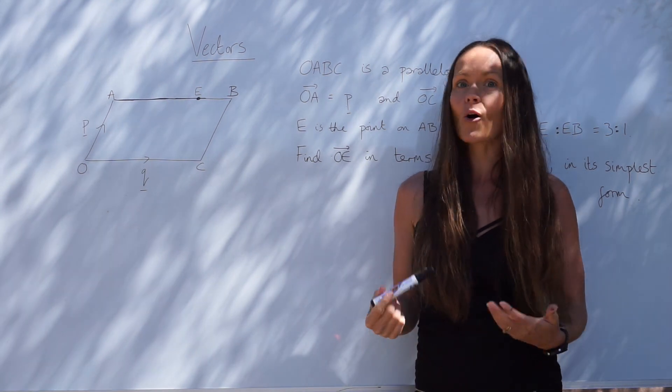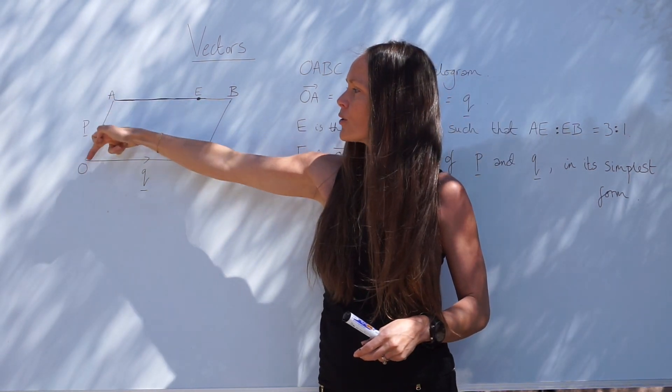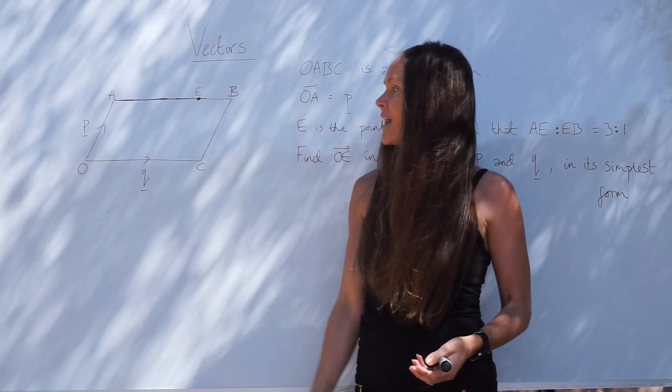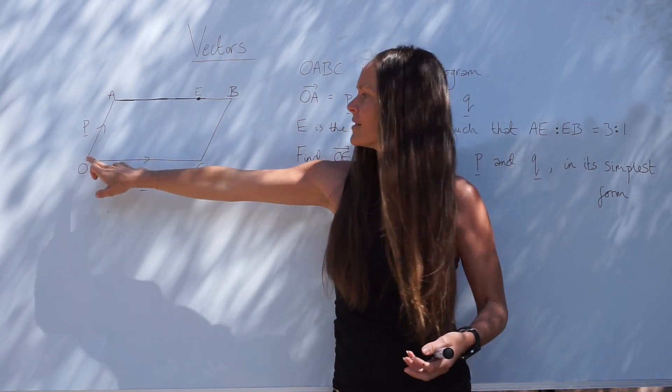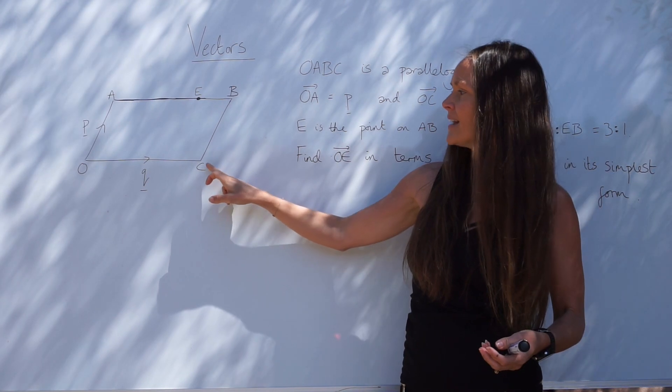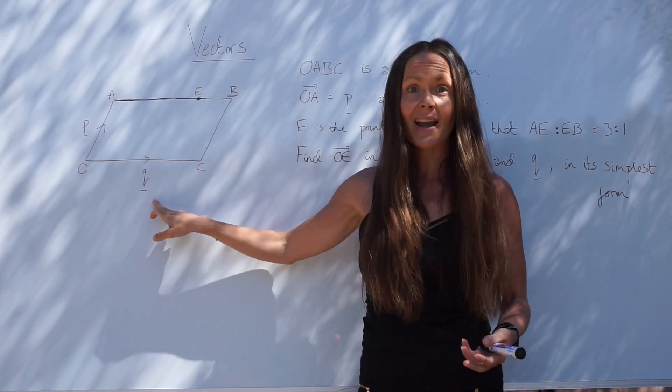But if we were to travel in the opposite direction, so from A to O against the arrow, this would become negative P instead. Likewise, if we look at vector Q, this is the direction of the vector. If we were to travel against the arrow, so from C to O, it would become negative Q.